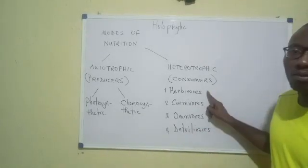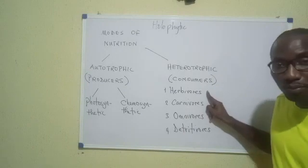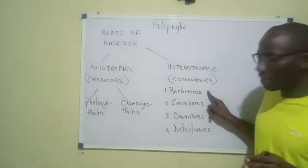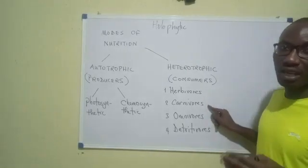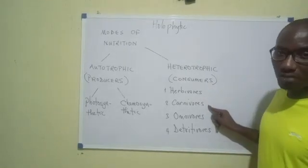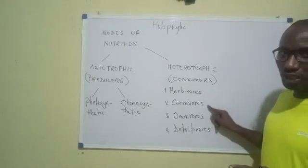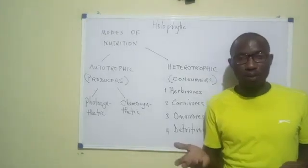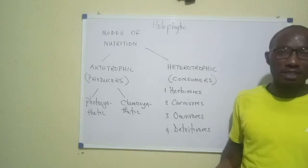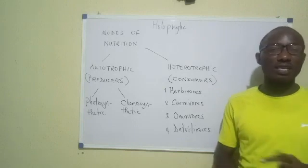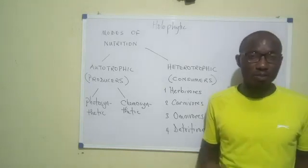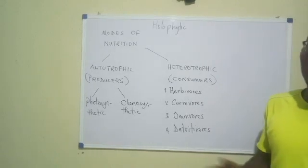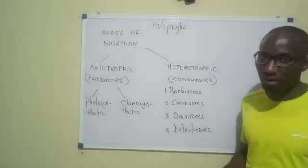Examples of herbivores include sheep and cattle — these feed exclusively on plants. Then you have carnivores like lions, which feed strictly on flesh. Then you have the omnivores. We are omnivores — we feed on plant materials and animal materials. The cockroach is an excellent example of an omnivore: beyond plant and animal materials, cockroaches can feed on virtually anything they find.